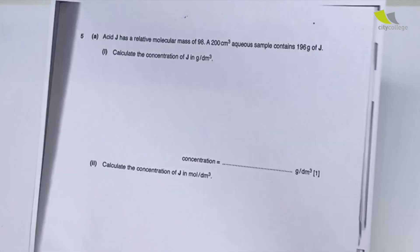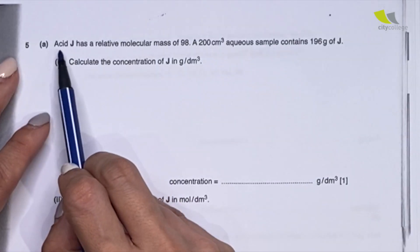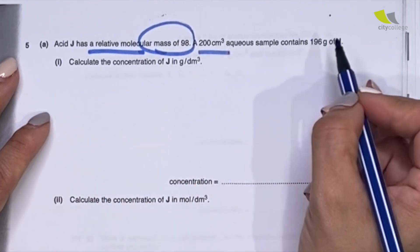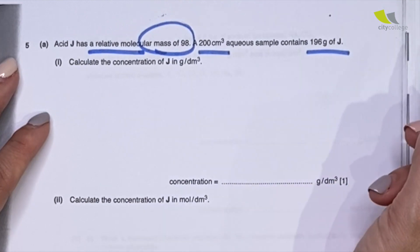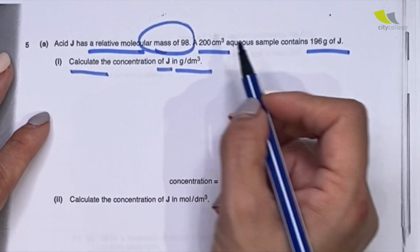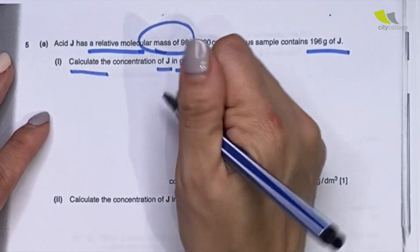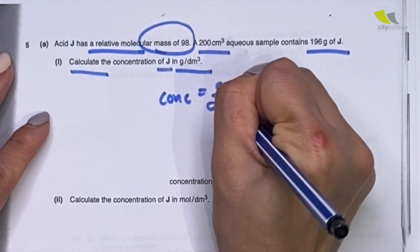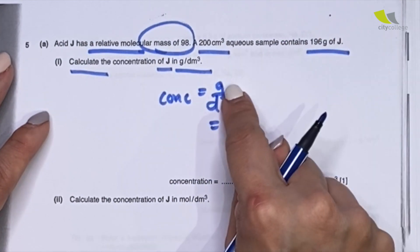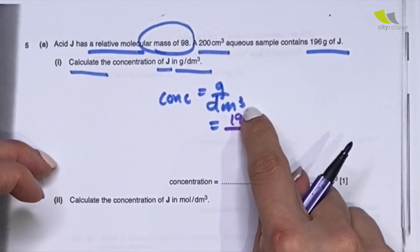First, I have this 2016 paper question. Acid J has a relative molecular mass of 98. 200 cm³ of aqueous sample contains 196 grams of J. They ask: calculate the concentration of J in gram per dm³. The units give you the formula — don't fret. Concentration equals gram over dm³. The mass given is 196, so I write down 196 over — this is in dm³.